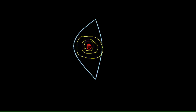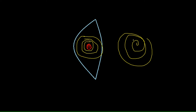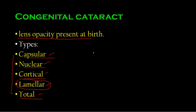In previous diagrams, the layers were mistakenly drawn as a spiral — it is actually more like discrete concentric circles. If one of these layers becomes opaque, that is called lamellar cataract. Lamellar cataract is actually one of the most common kinds of cataracts occurring in babies and infants.